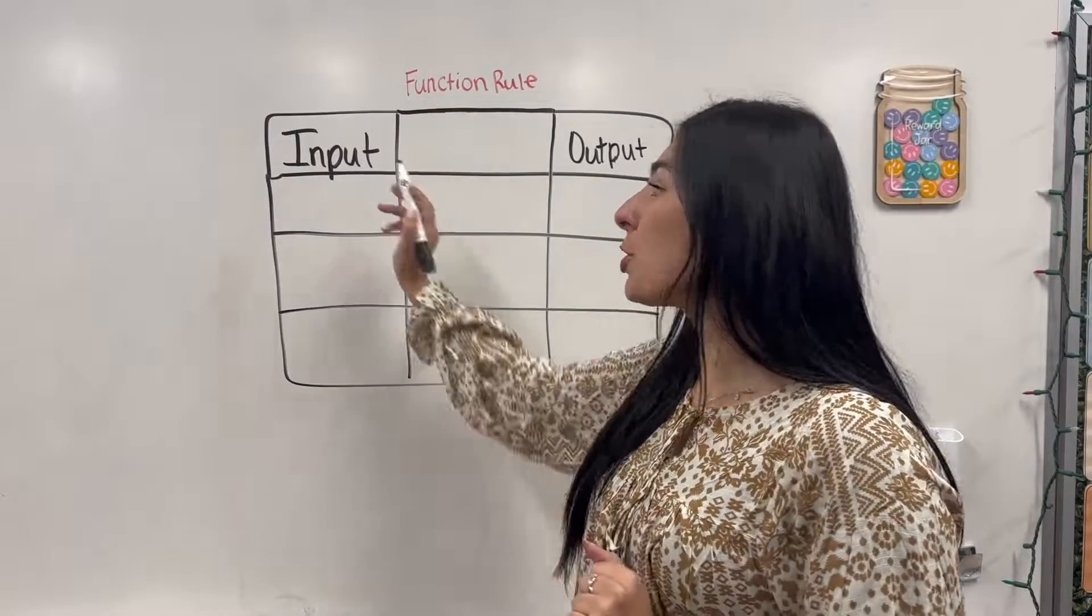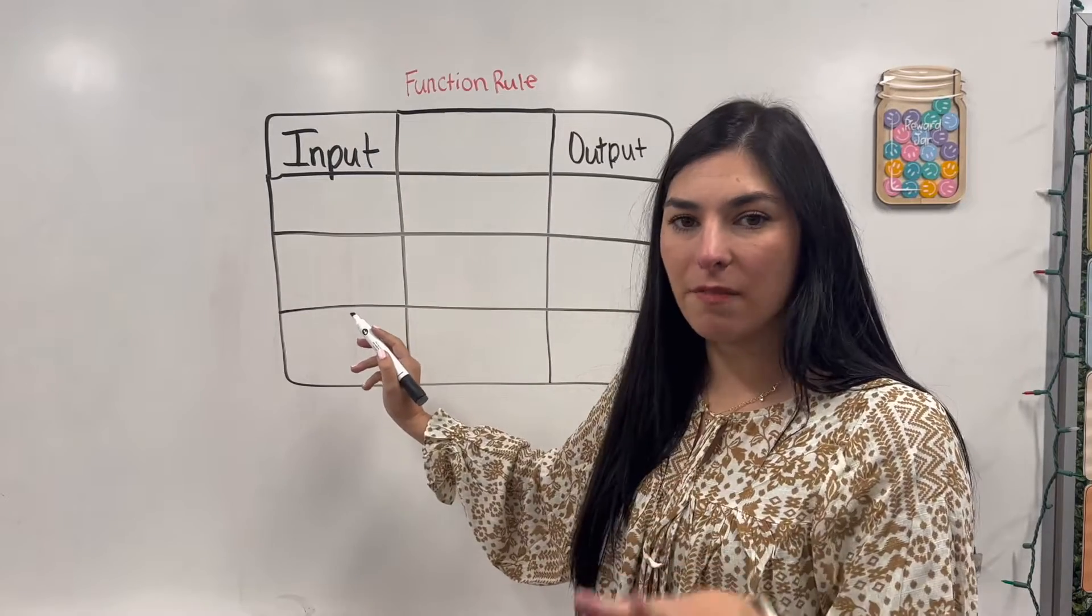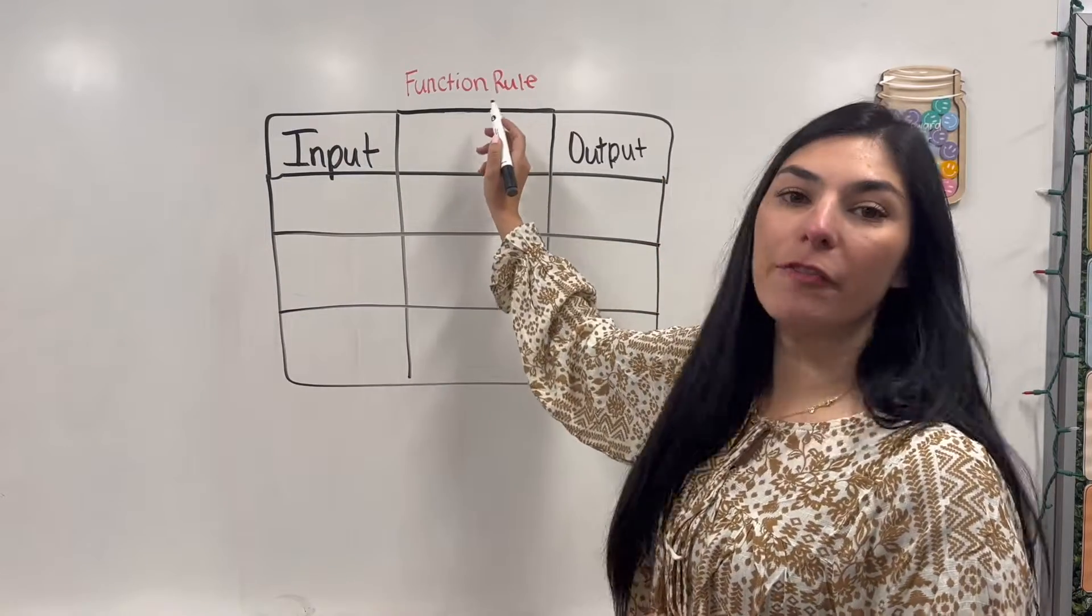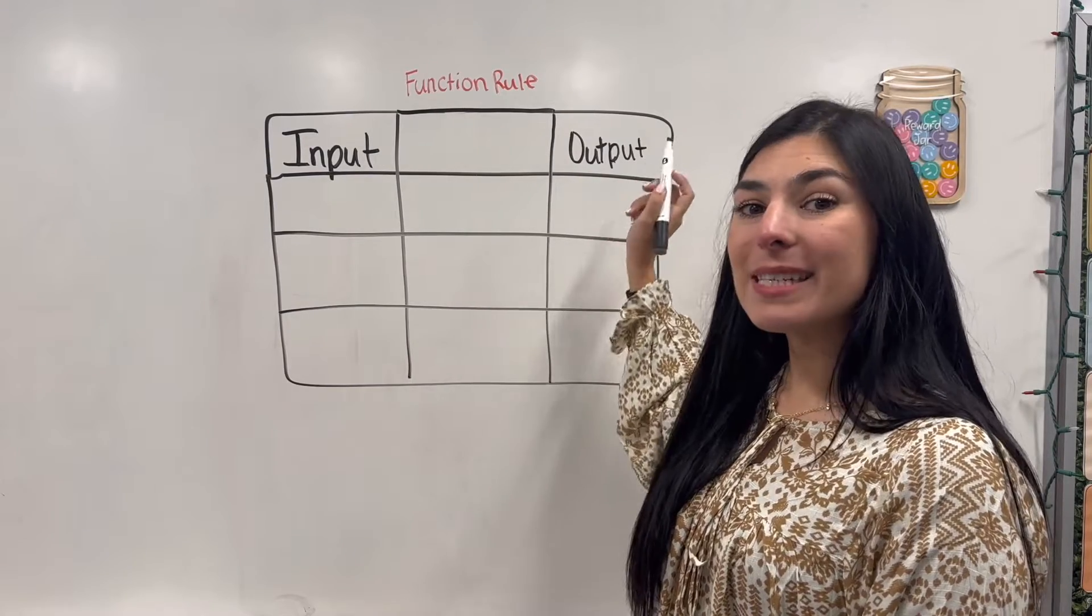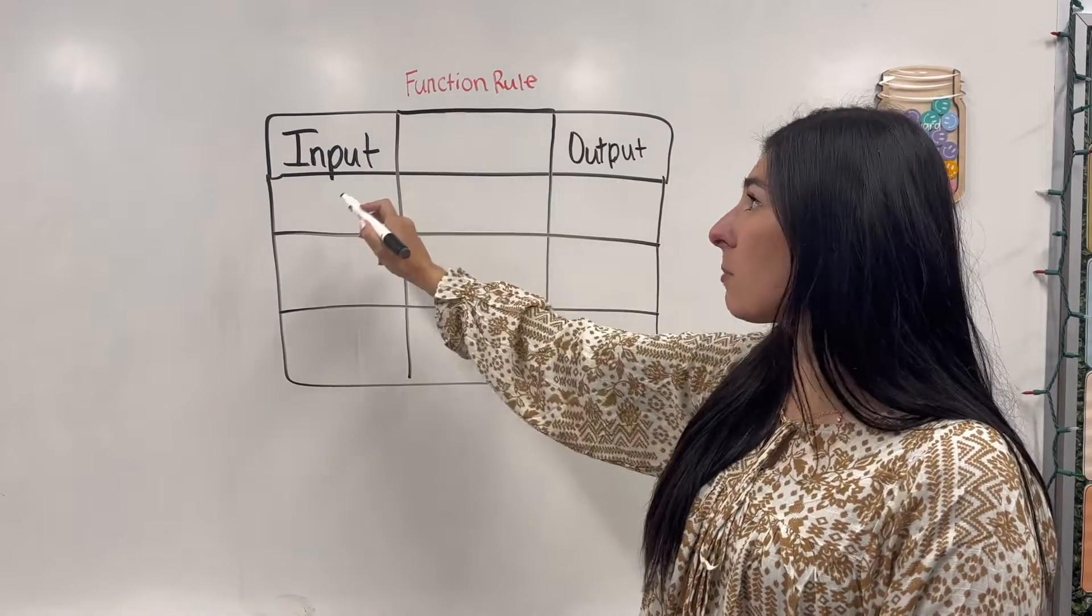Okay, so first I'm going to give you the input. The input is going to be the dependent variable. And then this middle is going to be our function rule, the rule that we follow in order to find the output. The output is dependent because it's dependent on the input and the function rule.